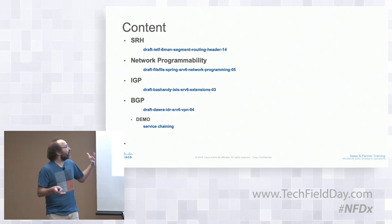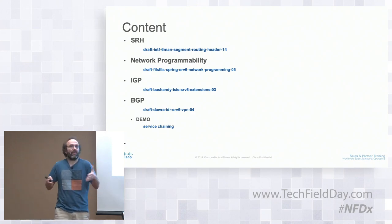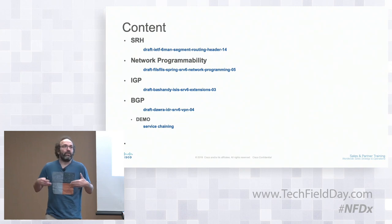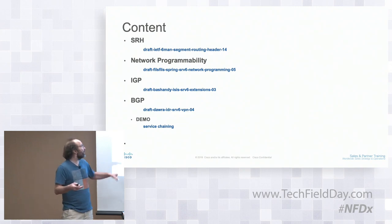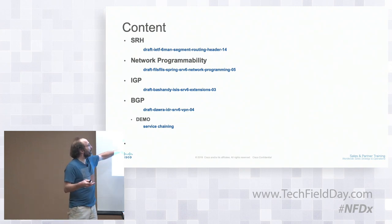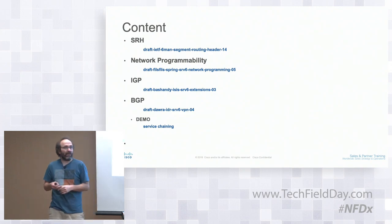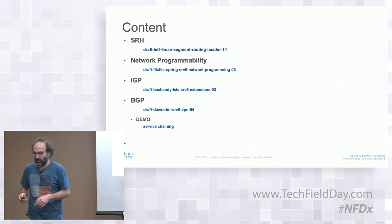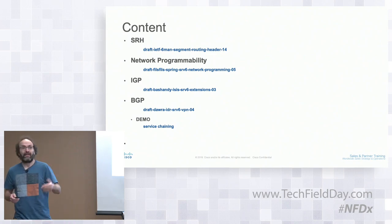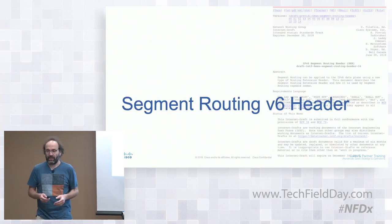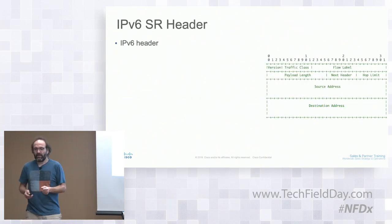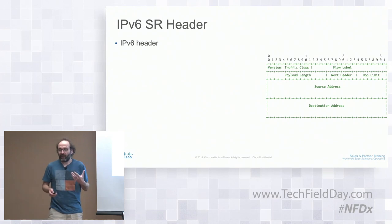There is a main draft called the network programmability draft, which describes all the functions related to networking. We will cover IGP and BGP extensions to SRV6. So we will start with SRH.